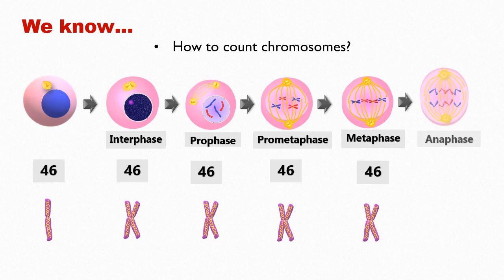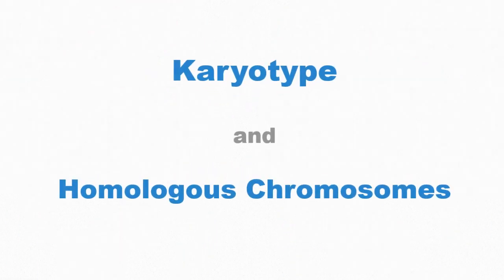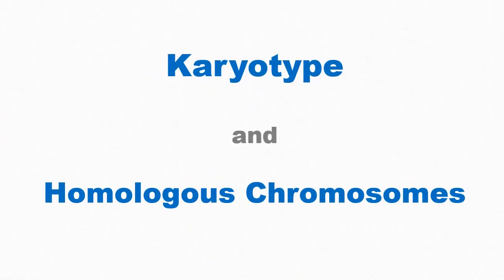In anaphase, when the sister chromatids of each chromosome separate from each other, the chromosome number becomes 92 — that is, double the initial number of chromosomes. Keeping these concepts in mind, let's begin with today's video lecture. Today we will understand what we mean by karyotype and homologous chromosomes.